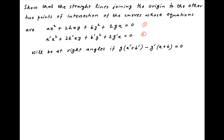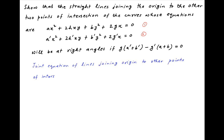Let's denote the equations of the two curves by 1 and 2 respectively. Note that both curves pass through the origin. Now the joint equation of the lines joining the origin to the other points of intersection of the two curves is obtained by making equation 1 homogeneous of degree 2 using equation 2.